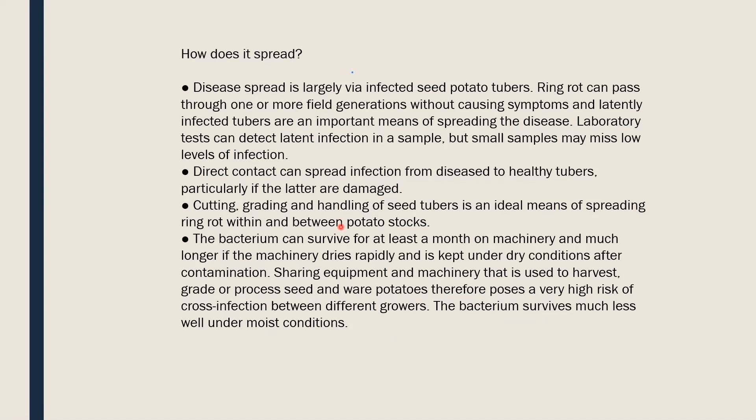The disease spreads largely via infected seed potato tubers. Ring rot can pass through one or more generations without causing symptoms, and latently infected tubers are an important means of spreading the disease. Latently infected tubers are those not showing any symptoms, but the causal agent is present in a small amount. When these infected tubers are used again for planting, the new crop becomes infected as well.